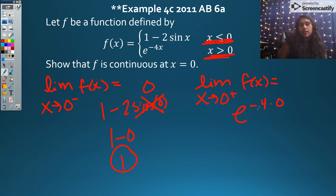What about what's happening over here? That's negative 4 times 0, that's 0, e to the 0th. Anything to the 0th power is simply 1. So now I know that my limit from the left and my limit from the right equal each other. So I know that the limit as x approaches 0 of f of x equals 1.